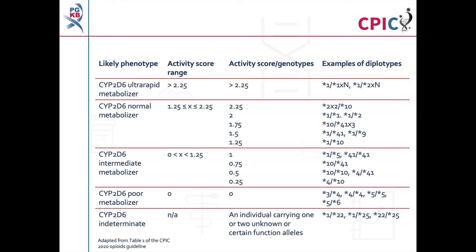The activity values of a patient's CYP2D6 alleles can be added together to give a total CYP2D6 activity score for the patient. The CYP2D6 activity score is then used to assign a CYP2D6 metabolizer phenotype. Note that genetic tests from different laboratories may not use this scheme, so the guideline advises that a patient's CYP2D6 diplotype is noted and activity score calculated before making clinical decisions.